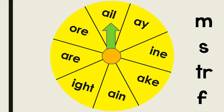Our first word family is the AIL pattern — A-I-L. To make words, all you do is add an initial consonant or consonant blend to the word family.